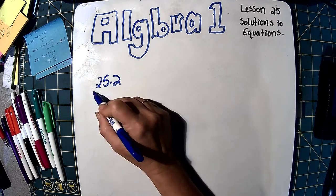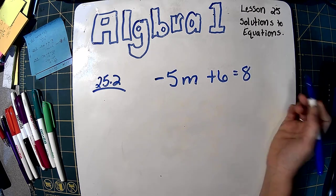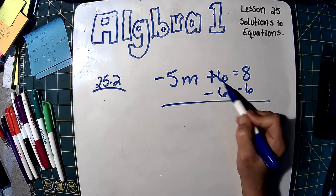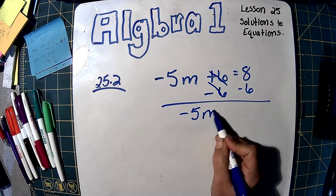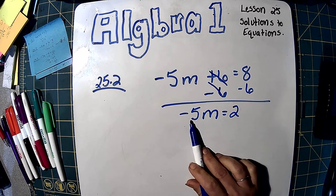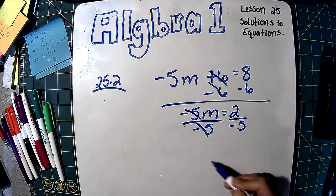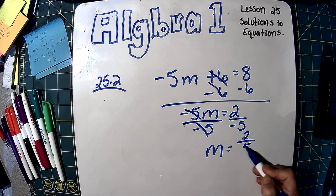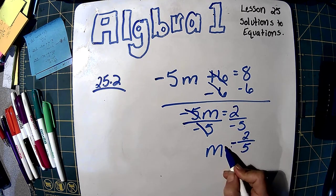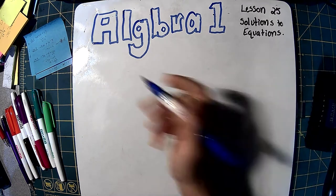25.2 — they start to get a little bit more difficult. Negative 5m plus 6 equals 8. First thing we have to do is get rid of this plus 6, so we're going to do minus 6 on both sides. These cancel and we're left with negative 5m equals 8 take away 6, which is 2. Now we're going to divide by negative 5 on both sides. These cancel and we're left with m equals negative 2 over 5. You can just leave it as a fraction — you don't have to turn it into a decimal.